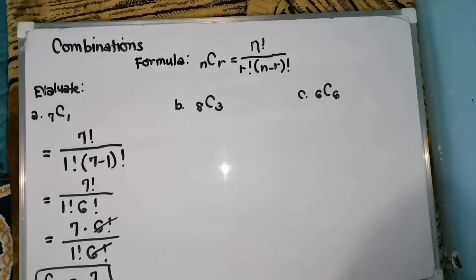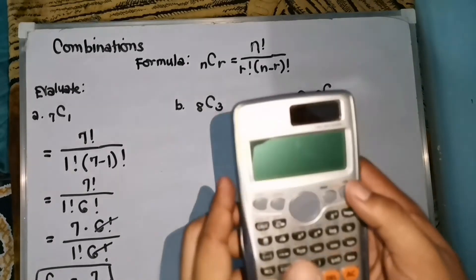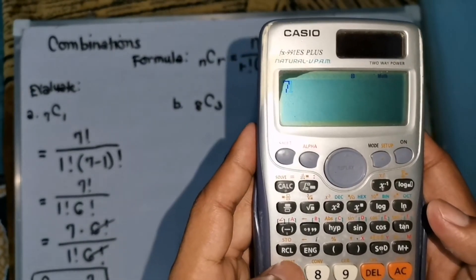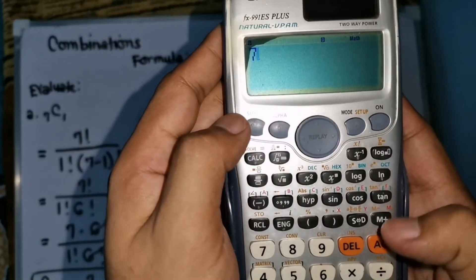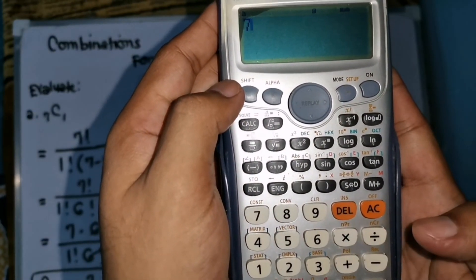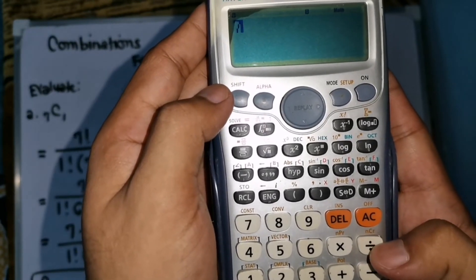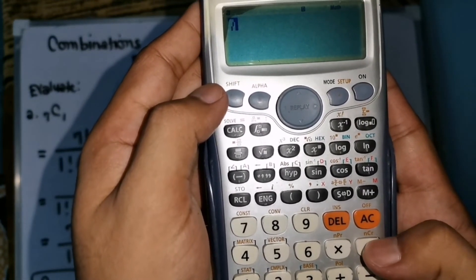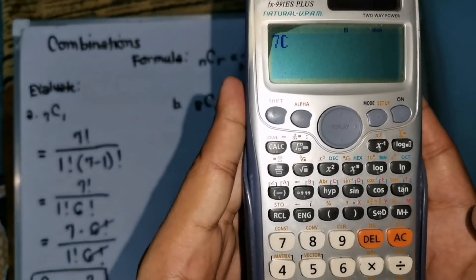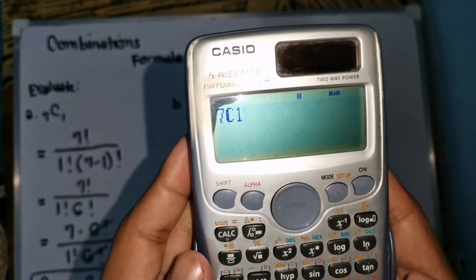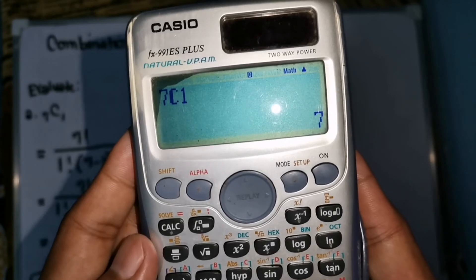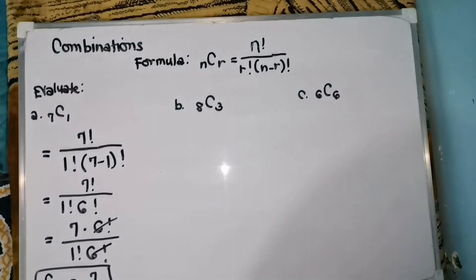We can check this using a scientific calculator. Press 7, then shift, find NCR — that's the one on the division sign — that is for combination, then press 1 and equals. The answer is 7.